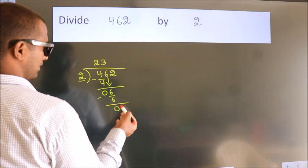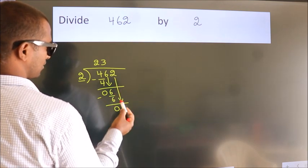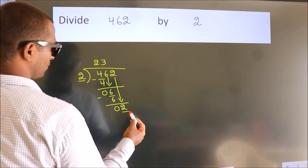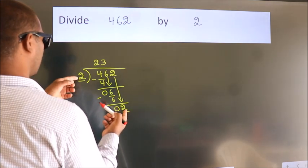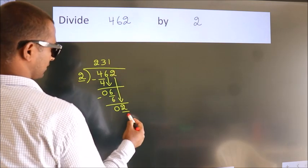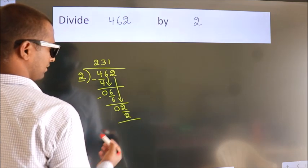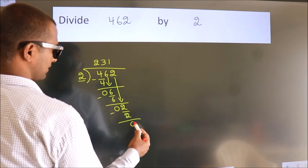After this, bring down the beside number. So, 2 down. When do we get 2? In 2 table. 2 times 1 is 2. Now, we subtract. We get 0.